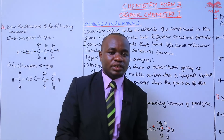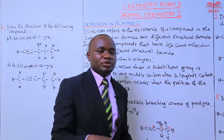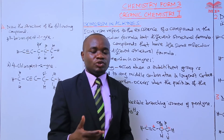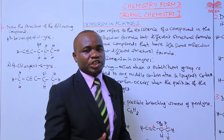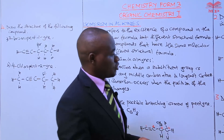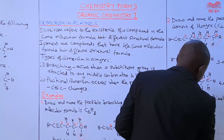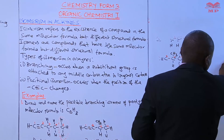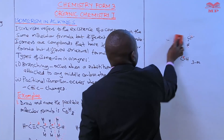In today's lesson we have learned that alkynes exhibit two types of isomerism, just like alkynes: branching isomerism, which occurs when there is a substituent group, and positional isomerism, which occurs when the position of the triple bond changes. We have now come to the end of our lesson.